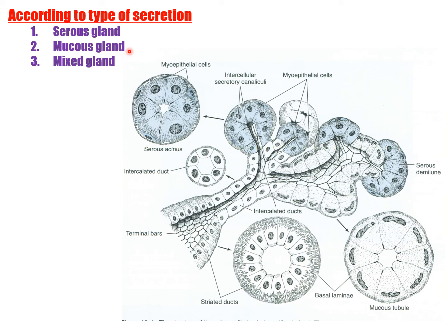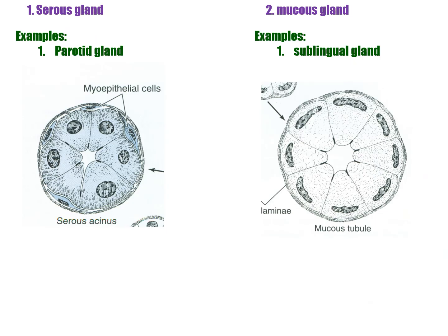Mucous gland: secretion contains mucopolysaccharides; cells secrete mucus which is thick, viscous, jelly-like protective lubricant. Cells of mucous acini are tall with flat nuclei at their base; the lumen is larger than serous acini. Examples: goblet cells, minor salivary glands of the tongue and palate. Mixed gland: contains acini that secrete both mucous and serous secretion. Examples: submandibular and sublingual glands.